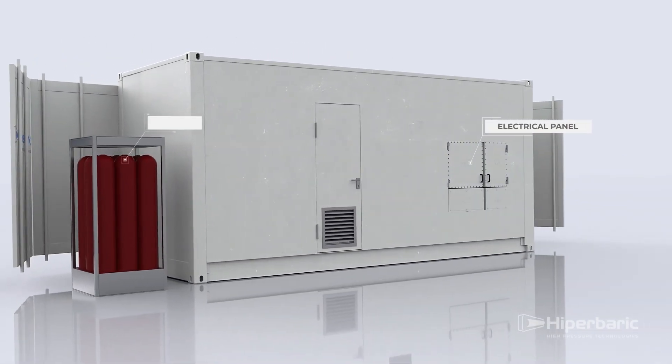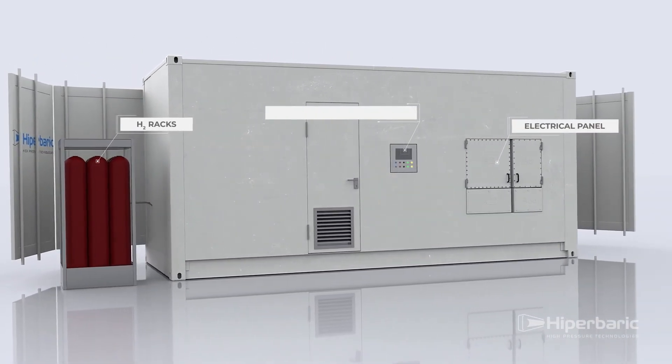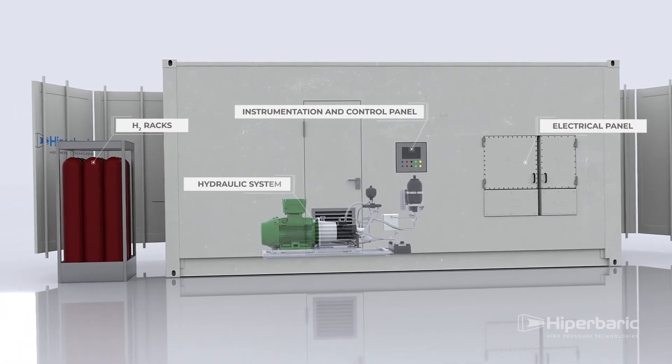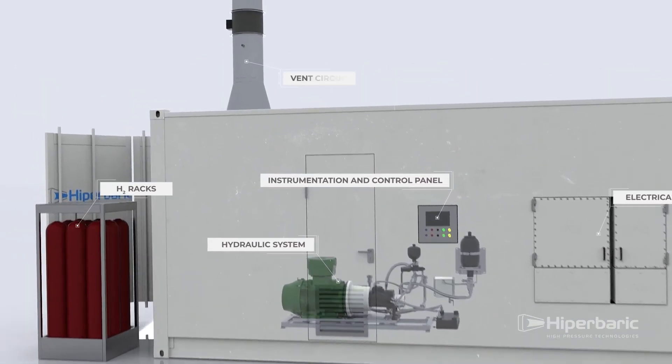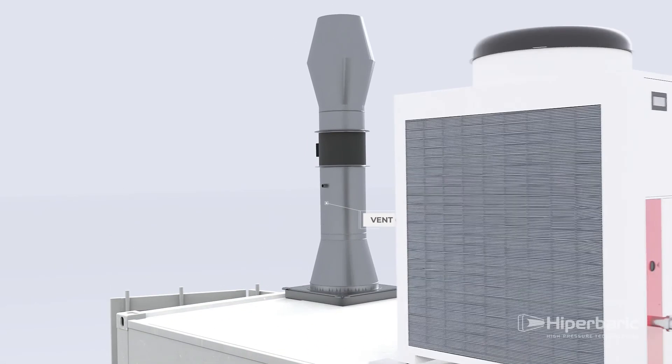The hyperbaric compressor group houses the following elements in its container: electrical panel, valves, sensors, control panels, hydraulic system and vent circuit, to guarantee its safety and optimal operation.